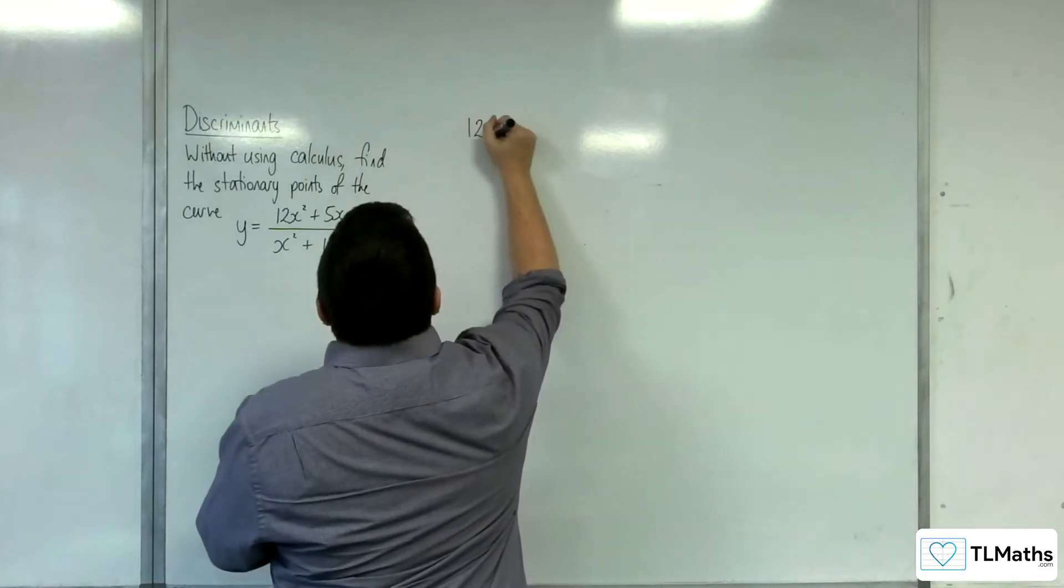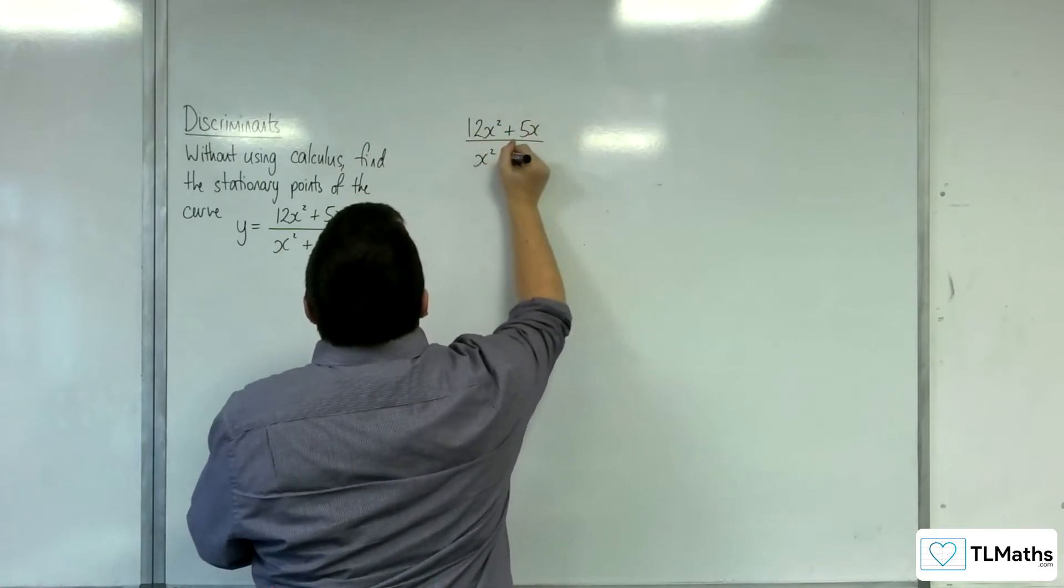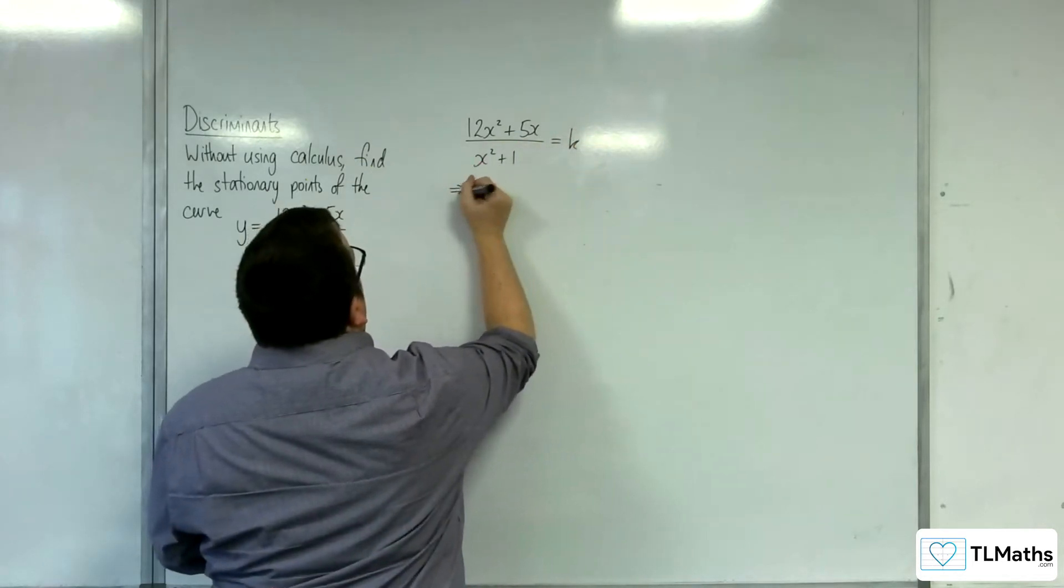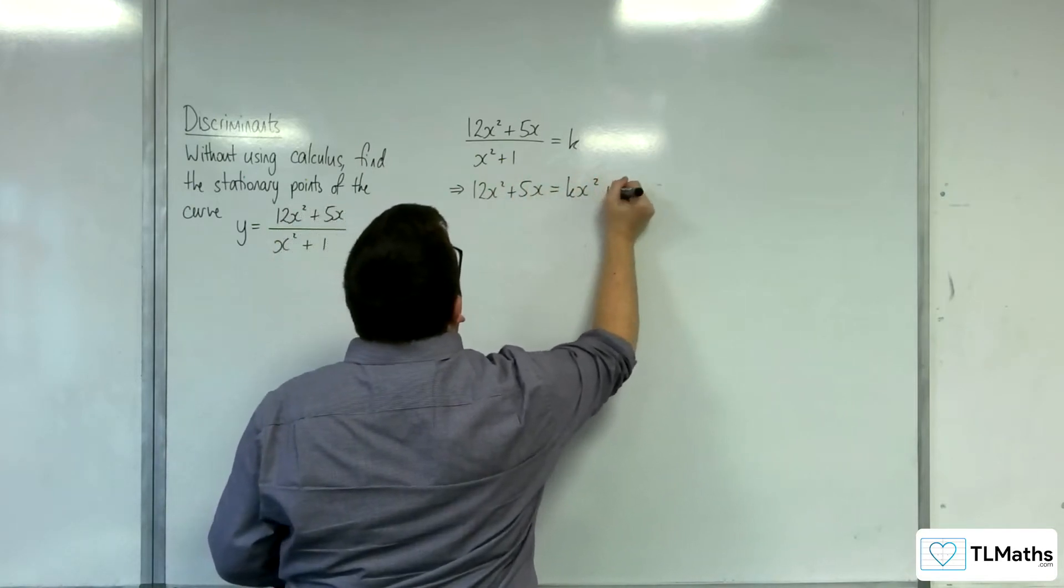Just as we've done in the previous videos, we're going to put 12x squared plus 5x over x squared plus 1 equal to k. I'm going to multiply up by the denominator, so kx squared plus k.